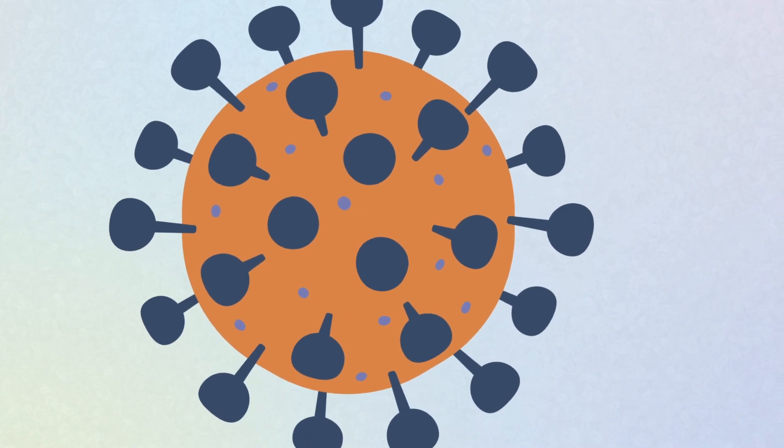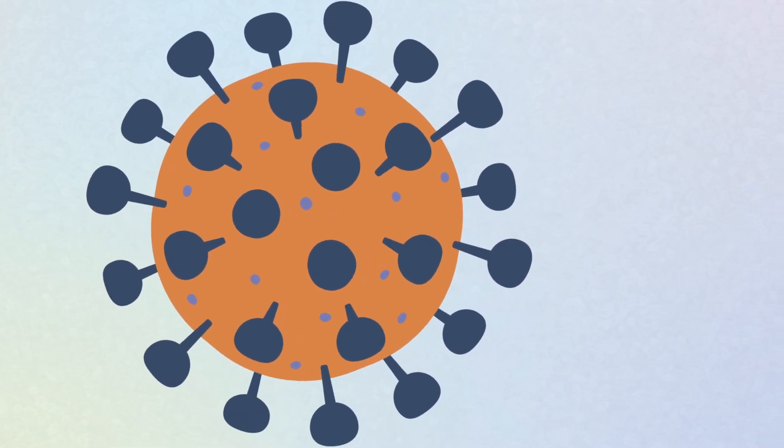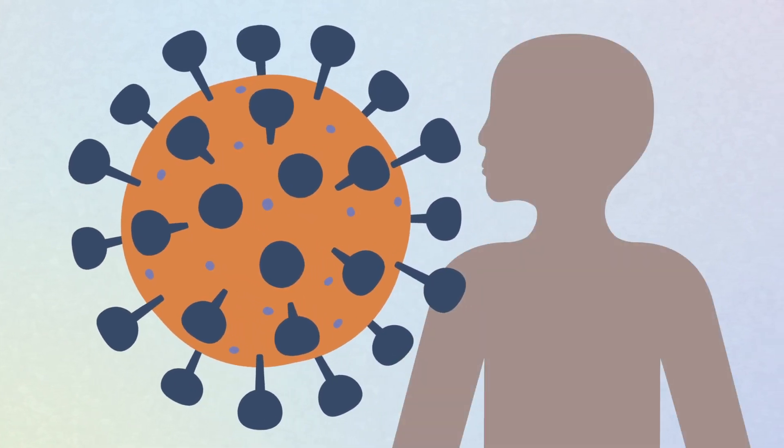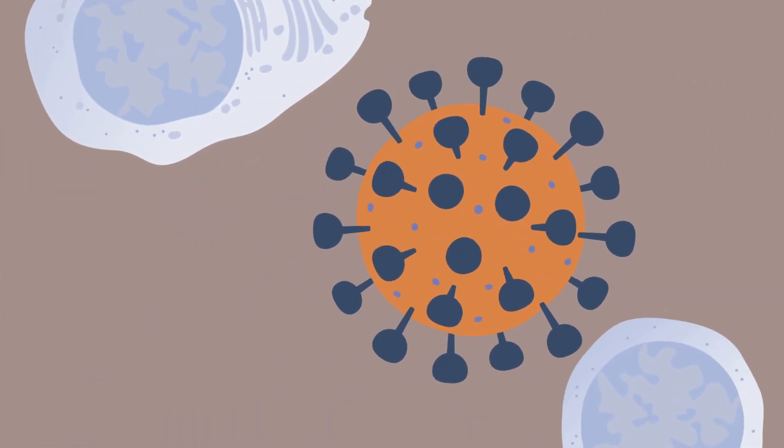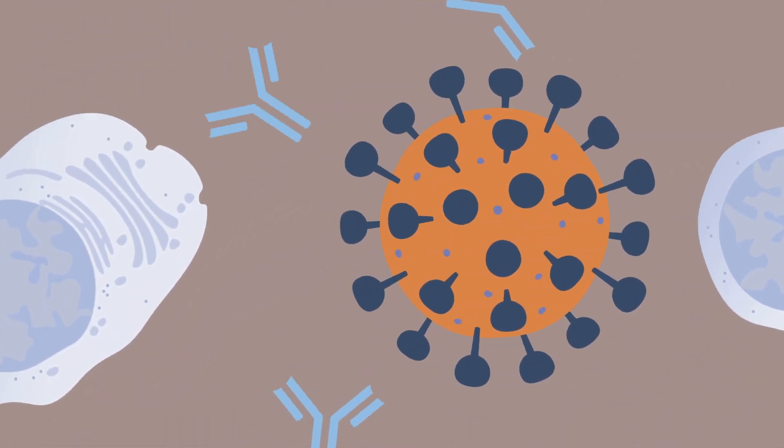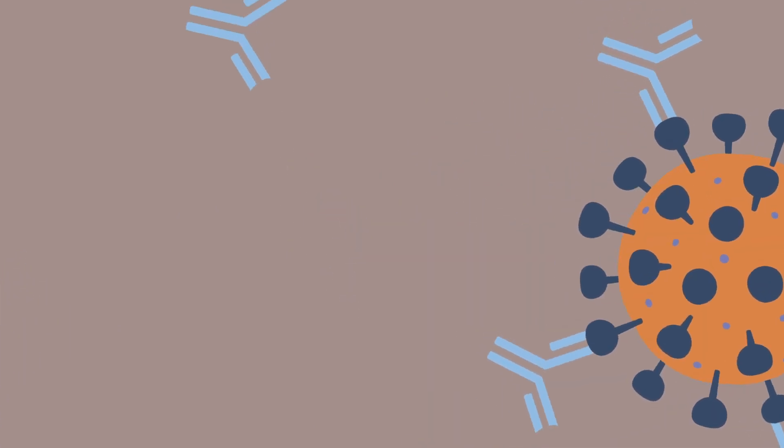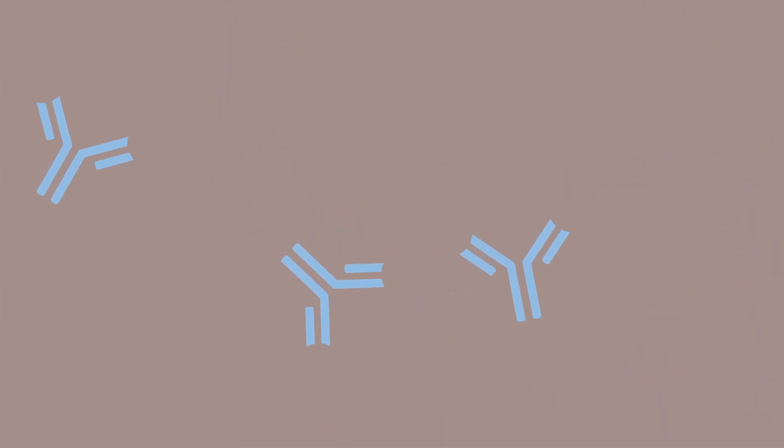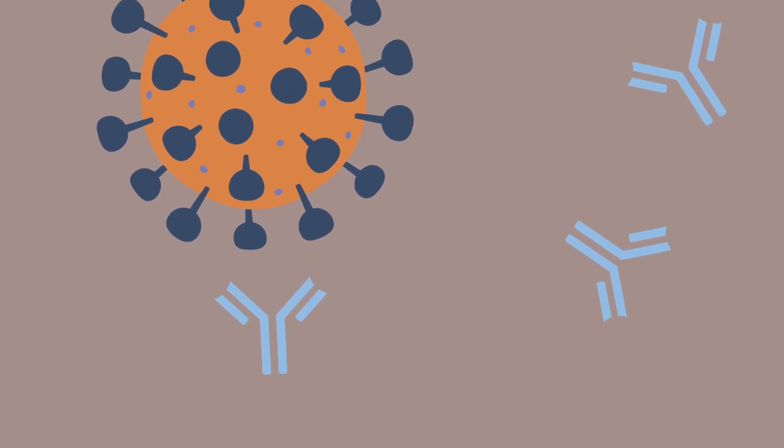So how do vaccines work, and how can we speed up the process? When a virus like SARS-CoV-2 enters your body, your immune system responds by producing specific antibodies to both neutralize the current infection and watch out for that virus' characteristic pattern, should it ever reappear.